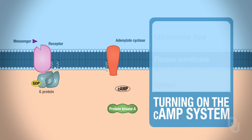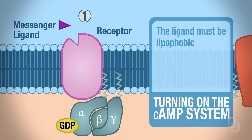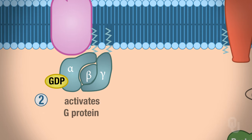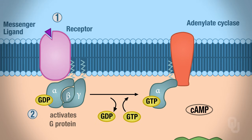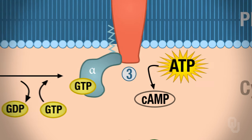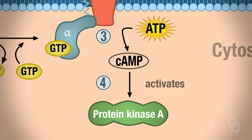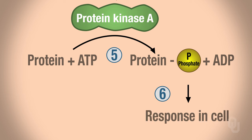Let's look at turning on the cyclic AMP system. We'll start with the ligand — remember the ligand must be lipophobic. The ligand binds to the receptor in step one. Step two, that activates the G-protein. GDP falls off the alpha subunit, GTP is added, and the alpha subunit slides over. When the alpha subunit slides over, it smacks into adenylate cyclase, your amplifier enzyme. That will then convert ATP to cyclic AMP, your second messenger, which then activates protein kinase A, which then phosphorylates a protein. It requires energy to phosphorylate a protein.